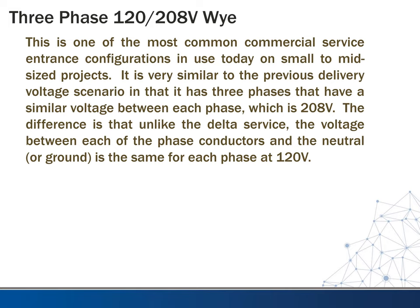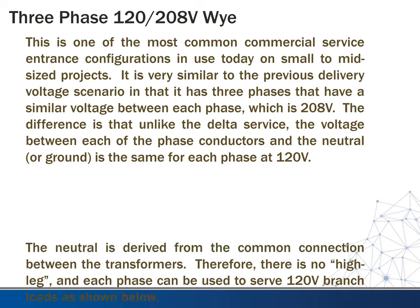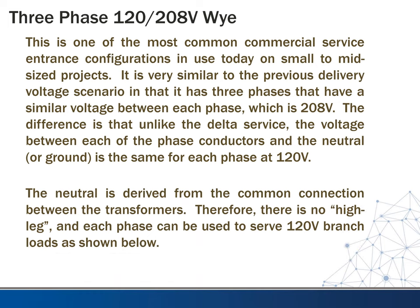The next service is probably one of the more common, especially in commercial building design — it's in use all over the place today, especially on small to mid-sized projects. This is the 120/208 volt Y connection — not delta, but Y. It's similar to the previous delivery voltage in that it has three phases, but this time we must have three transformers — you can't do it with just two like the delta. Instead of 240 volts between phases, we have 208 volts between phases. Unlike the delta service, the voltage between each phase conductor and the neutral is the same all the way around — 120 volts. The neutral is derived from a common connection between the transformers, so there is no high leg.